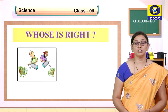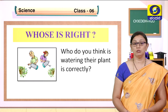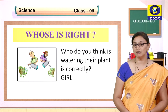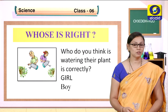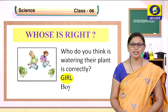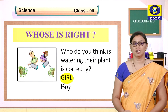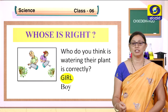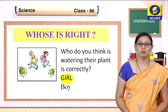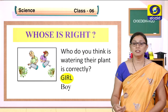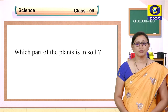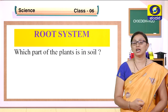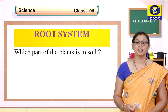Observe, children — who is watering their plant correctly, either the girl or the boy? Yes, it is the girl. Why is the girl correct? Because she is putting water to the particular part which is required by the plant. But the boy is watering another part. The part in the soil is the root.